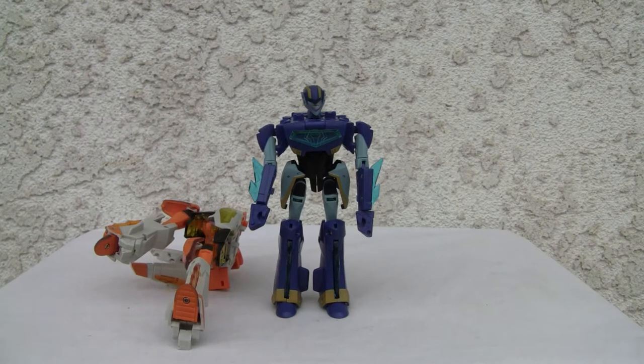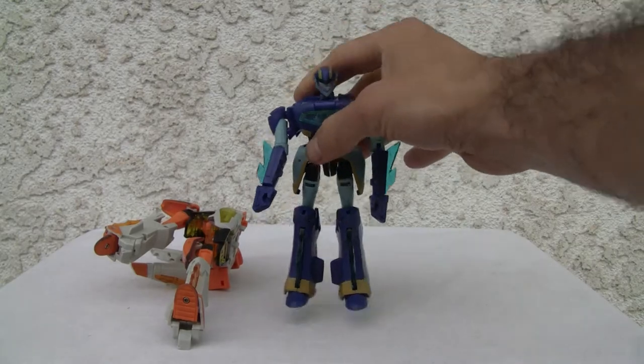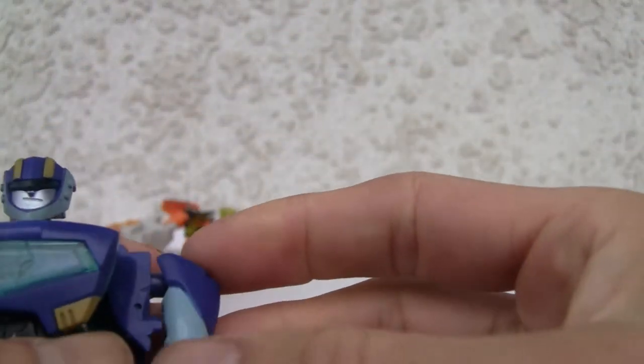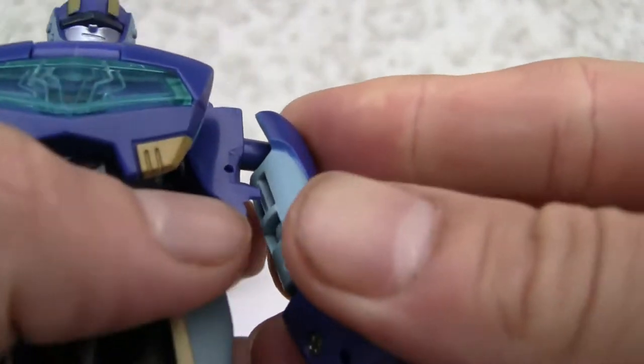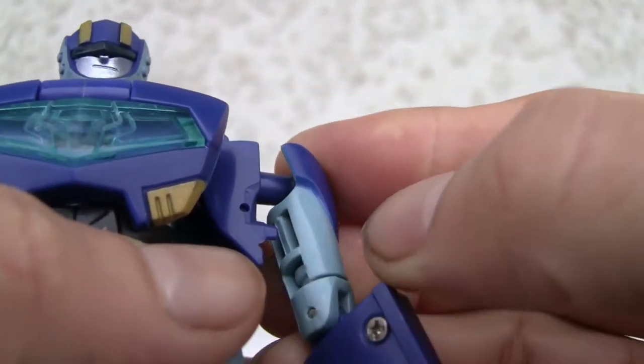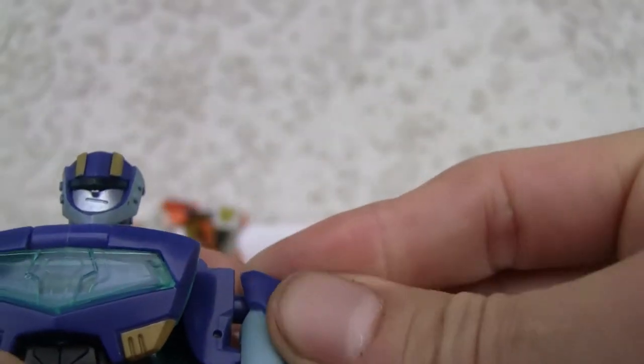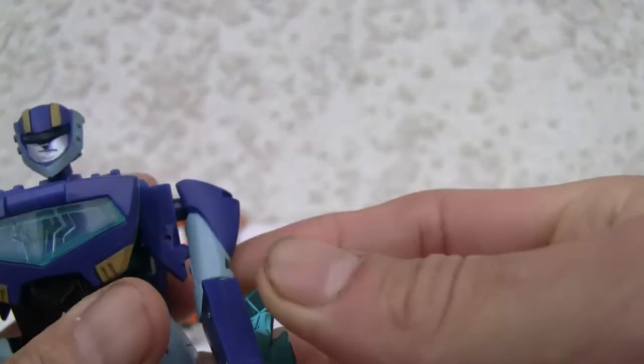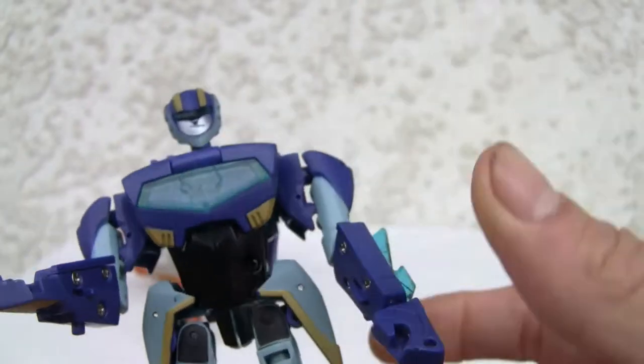So I already got Jetfire transformed because it's a mirror image of each other, so I'm not going to do it twice. One thing I wanted to point out is that the arms can actually tab into this little piece right here if you want it, but it does limit shoulder mobility. So if you want it, you can do it for stability. You really don't need it. This is a pretty stable guy.